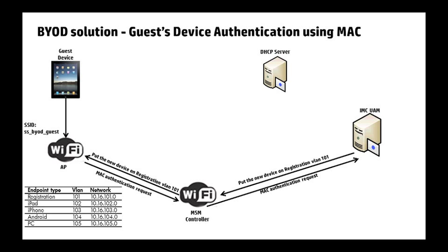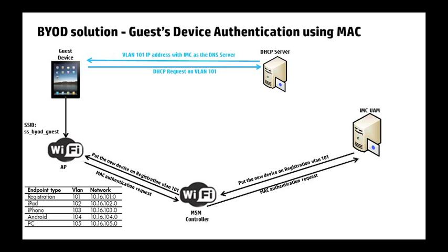At this point the guest device is connected to the network on VLAN 101, but it doesn't have an IP address. So it sends out a DHCP request, which is forwarded on VLAN 101 over to the DHCP server. The DHCP server responds with an IP address valid for the 101 network, but it replaces the network DNS server with the IP address of the IMC server — this will be used to support the authentication and authorization process. The DHCP agent installed on that server then sends specific device information about the guest device over to the IMC server.